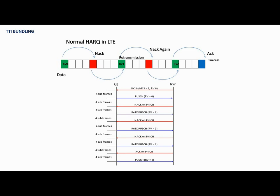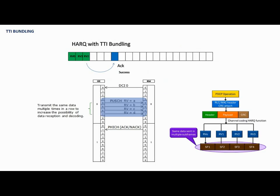TTI bundling is the method in which the UE transmits PUSCH in multiples of frames in a row. According to the current specification, it is 4 subframes — or we can say the UE transmits PUSCH in a bundle TTI.